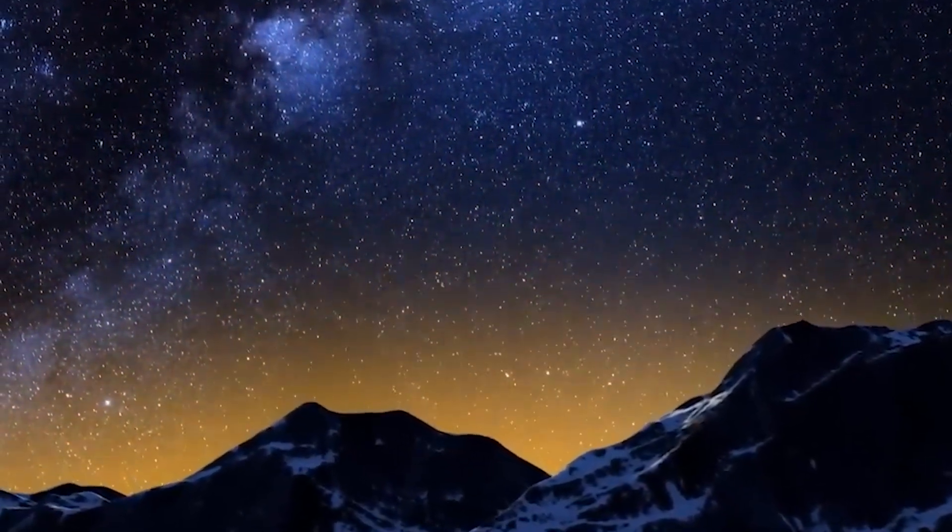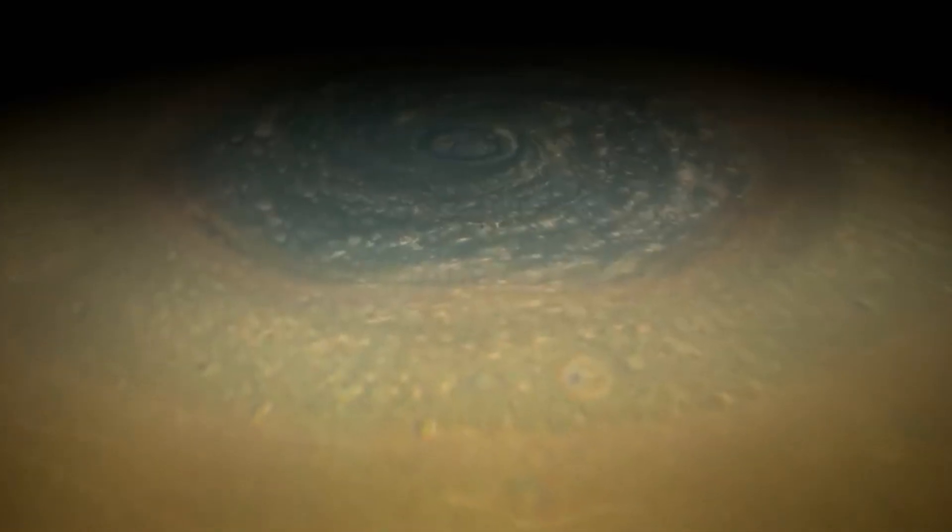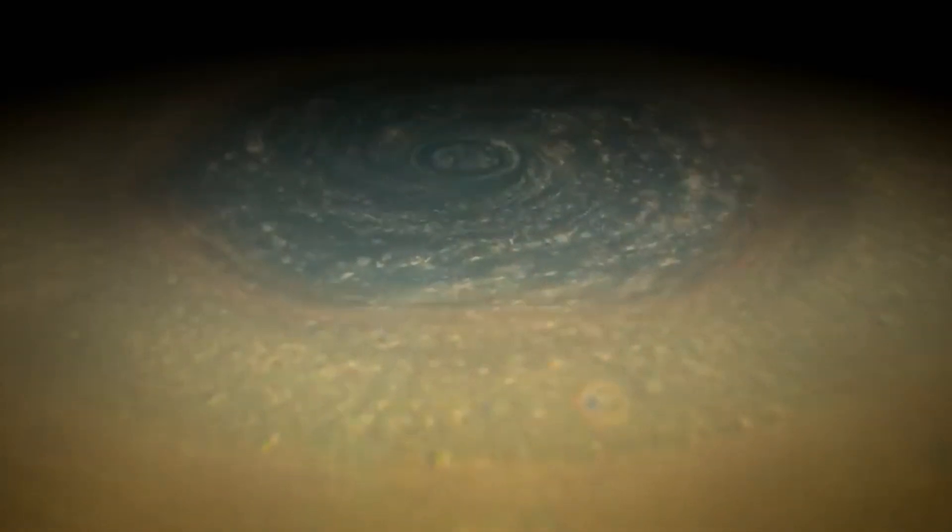These high-speed winds fuel massive storms, including enormous cyclones like the famous Big Dark Spot. Discovered in 1989 by the Voyager 2 spacecraft, this storm was about the size of Earth, swirling at incredible speeds.